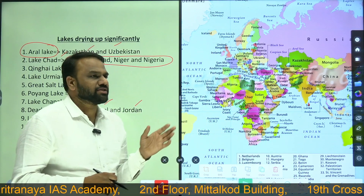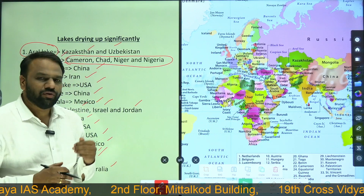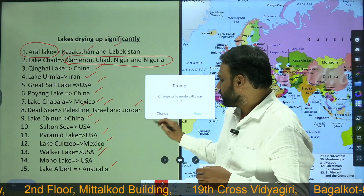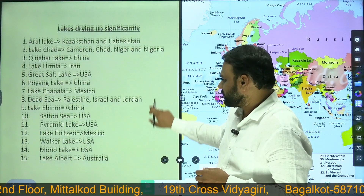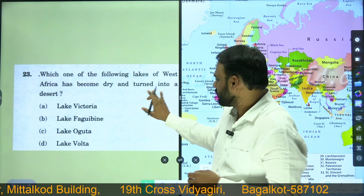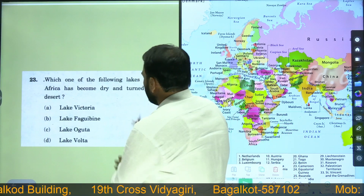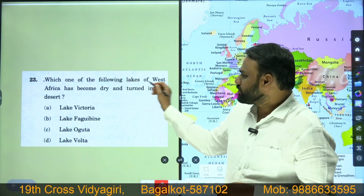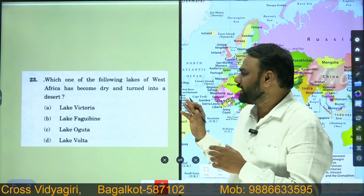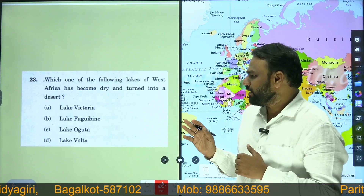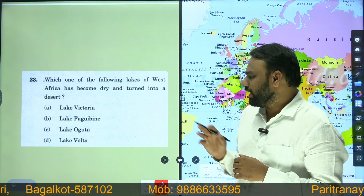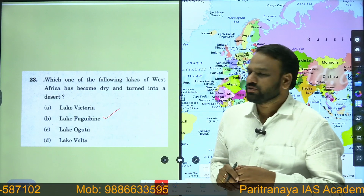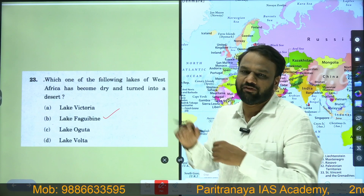So that is the list of lakes which have significantly dried up. Now based on this content, let us look into previous year questions. This is a question from 2022: 'Which of the following lakes of West Africa has become dry and turned into a desert?' The options are Lake Victoria, Lake Fagu Ibin, Pago Abhin, Lake Oguta, and Lake Olta. The correct answer is Lake Fagu Ibin, which we covered in our content.